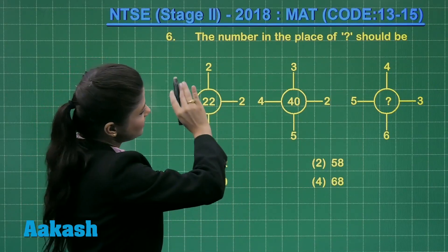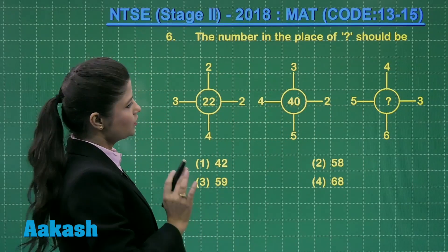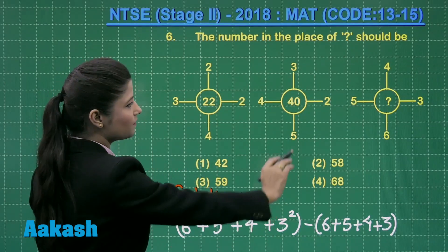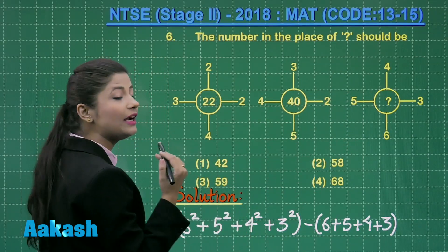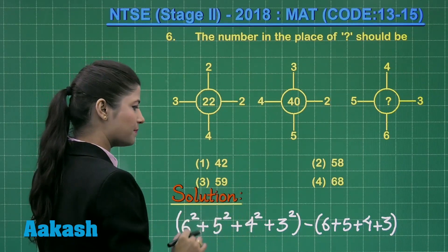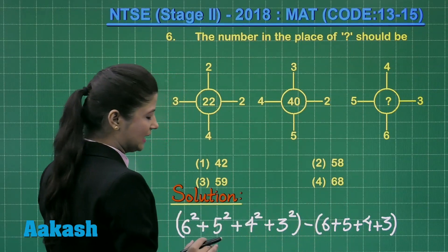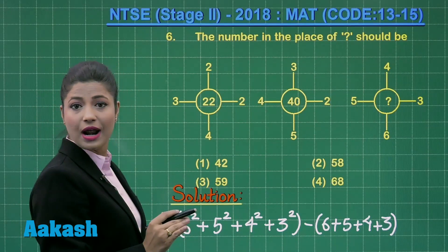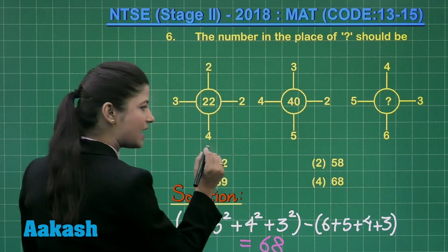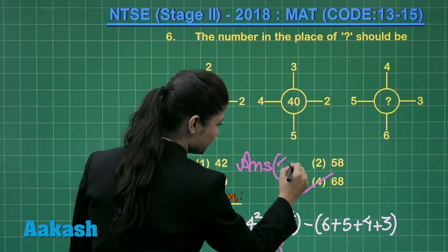The same pattern is followed in the second given pattern, and this will also be followed in the third one. Let us obtain the missing number following the same pattern. You have to take the squares of the 4 numbers: 6, 5, 4 and 3. And from that, you need to subtract the sum of these 4 numbers. So 6² + 5² + 4² + 3² equals 86. And from that, subtracting 18, you obtain the resultant as 68. This means the correct answer for this question is option number 4.